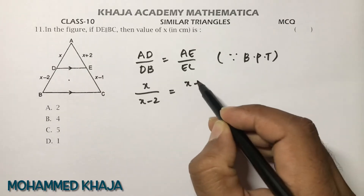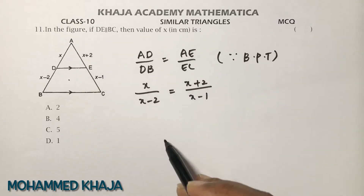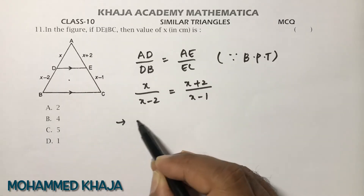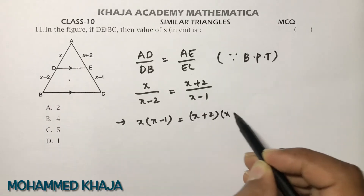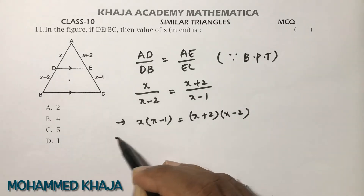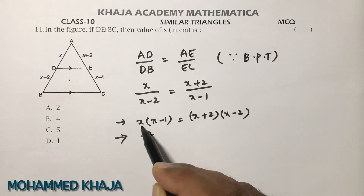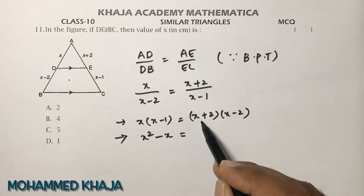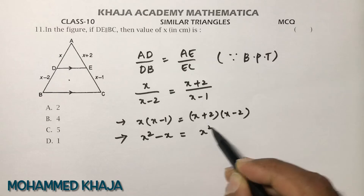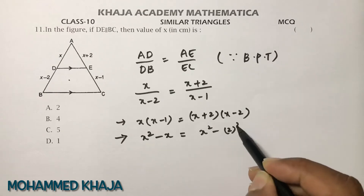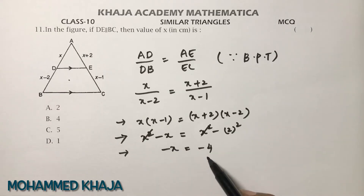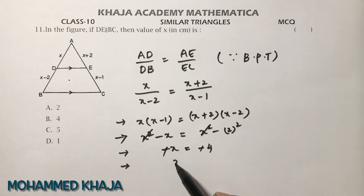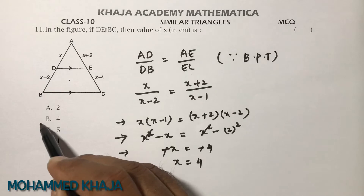AD = x, DB = x−2, AE = x+2, EC = x−1. Cross multiplying: x(x−1) = (x+2)(x−2). So x²−x = x²−4, applying (a+b)(a−b) = a²−b². x² cancels, −x = −4, so x = 4. The correct option is B.